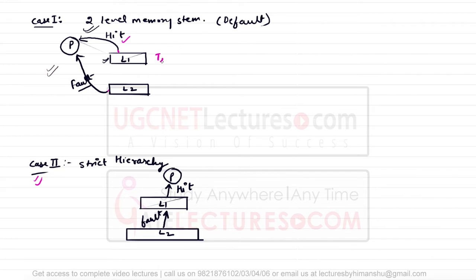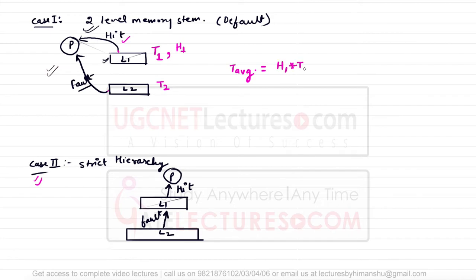Assuming the time to access Level 1 is t1, the hit ratio is h1, and the time to access Level 2 is t2. For Case 1 (default), the average time T_avg equals h1 × t1 plus (1 − h1) × t2. That is: h1 fraction of the time data is found in Level 1 (access time t1), and with probability (1 − h1) we must go to Level 2 (access time t2).